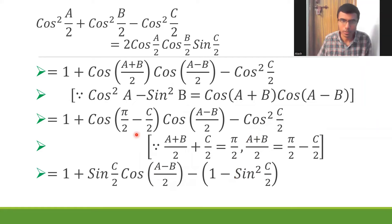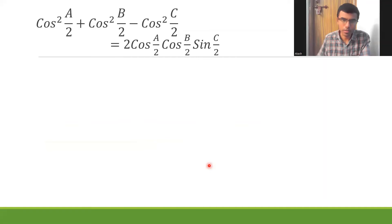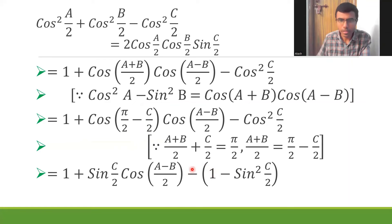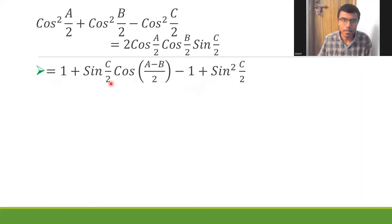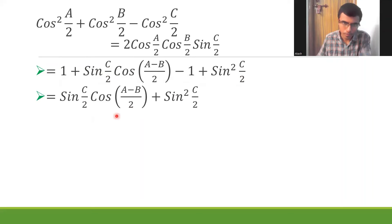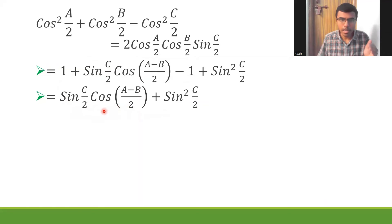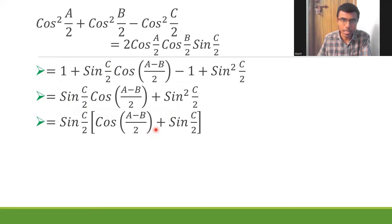These are the two changes applied. Now multiplying through, minus 1 times the expanded terms gives -1 + sin(c/2). The 1 and -1 cancel, and I'm left with sin(c/2)·cos((a-b)/2) + sin(c/2). Taking sin(c/2) common from these two terms gives sin(c/2)·[cos((a-b)/2) + sin(c/2)].